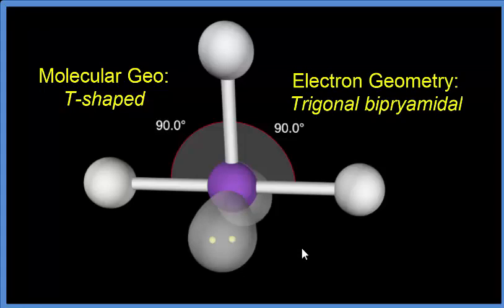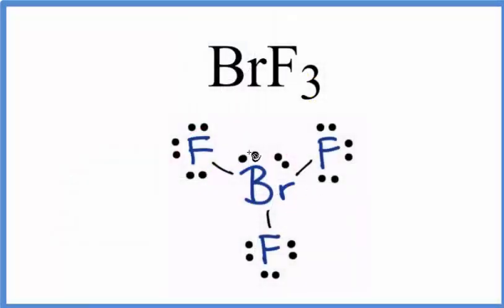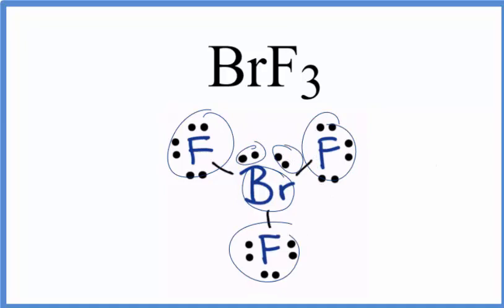Let's go back to our Lewis structure. So again, we have our central bromine, we have three atoms, and then two lone pairs. So let's look at this table.